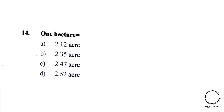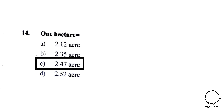Next, 1 hectare is equal to A. 2.12 acres, B. 2.35 acres, C. 2.47 acres, D. 2.52 acres. The right answer is option C, 2.47 acres.